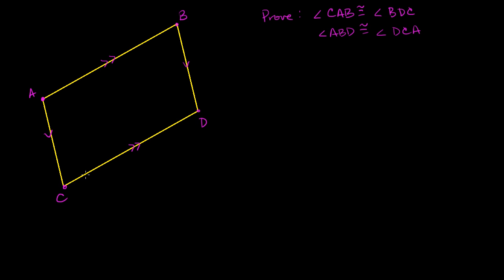To do that, we just have to realize that we have some parallel lines and some transversals, and the parallel lines and the transversals actually switch roles. Let's continue these lines so it looks a bit more like transversals intersecting parallel lines. It really just comes out of alternate interior angles and corresponding angles of transversals intersecting parallel lines.